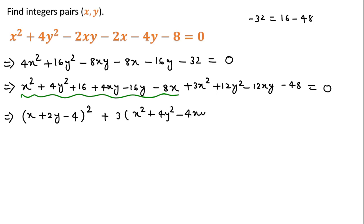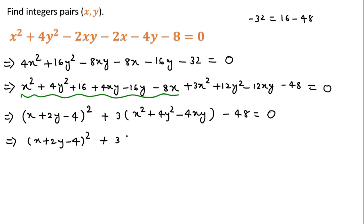After taking 3 common you can see x² plus 4y² minus 4xy, and minus 48 equal to 0. This is actually in the form of (a − b)² whole square. So we can write (x − 2y)² for this part, and this minus 48 we send to the right side.